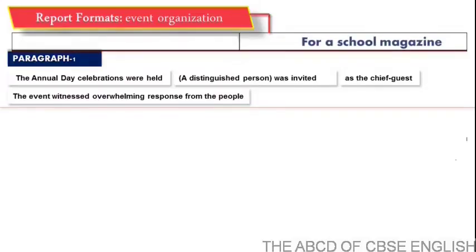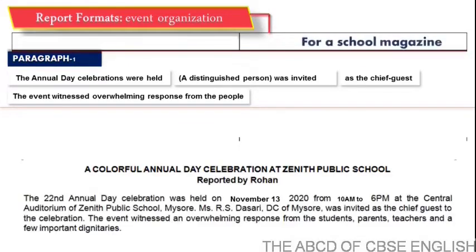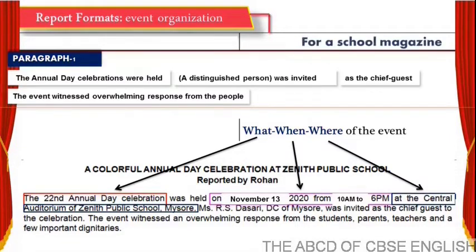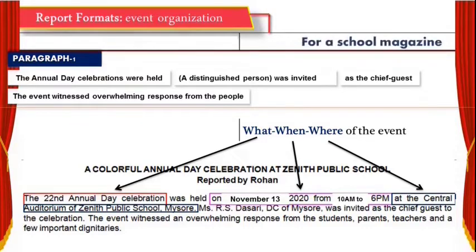Let us take one paragraph at a time. Take note of the usage of simple past and simple past passive sentences as you go through the slides. The heading is 'A Colorful Annual Day Celebration at Zenith Public School,' reported by Rohan. Now we write the what, when, and where. The event was the 22nd annual day celebration, held on November 13, 2020 from 10 a.m. to 6 p.m. at the central auditorium of Zenith Public School. Ms. R.S. Dasari, DC of Mysore, was invited as chief guest. The event witnessed an overwhelming response from students, parents, teachers, and a few important dignitaries.